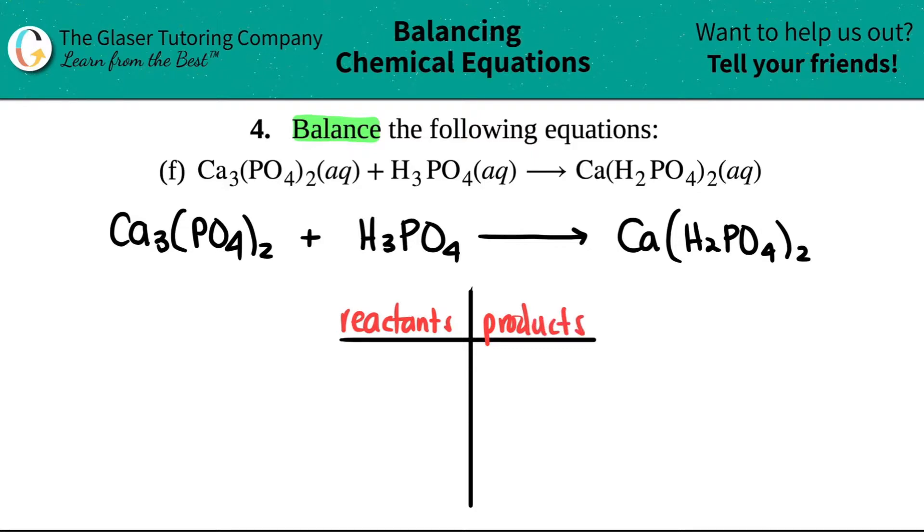Reactants on the left side and products on the right side. The reactants is everything on the left side of your yield—this is your starting material. And what you produce are your products. Now this one is going to be a little different. I want to do the chart differently because sometimes instead of writing down every single element, you can actually group elements together, but you can only group together polyatomics.